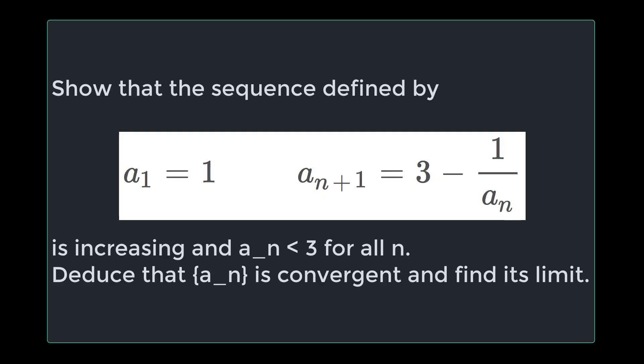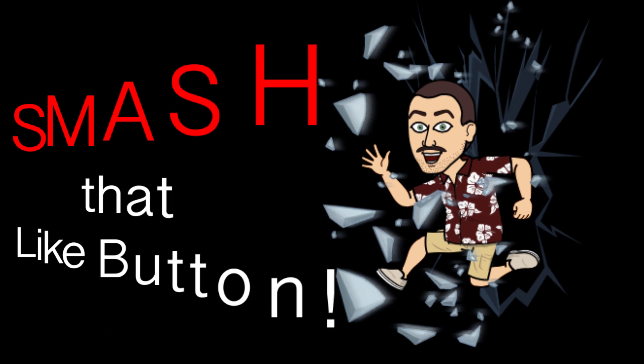The question we're working on today is: show that the sequence defined by a_1 equals 1 and a_{n+1} equals 3 minus 1 over a_n is increasing, and a_n is less than 3 for all n. Deduce that the sequence a_n is convergent and find its limit. Smash that like button and let's get started.